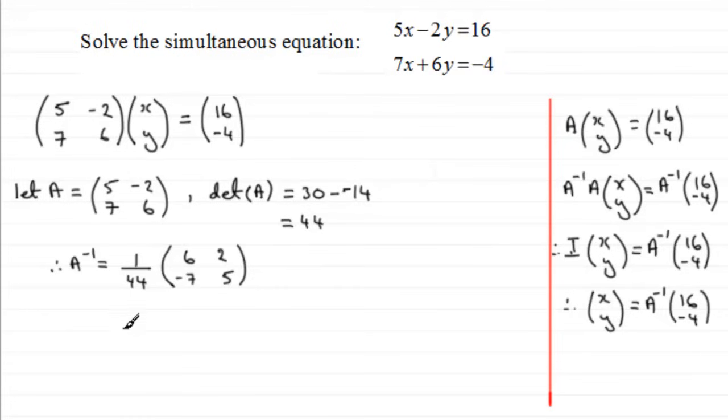So by this idea then, it means that therefore (x, y) is going to equal the inverse of A. Let's just put it then as 1 over 44, and then (6, 2; -7, 5), and we multiply this by (16, -4).